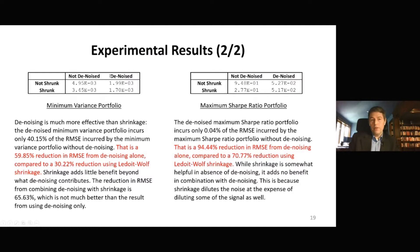When we denoise the correlation matrix without shrinkage — just denoising, no shrinkage — there is a substantial reduction in the root mean square error. The reduction is around 60%. Think about it: 60% reduction in the estimation error from simply applying Marchenko-Pastur, separating the noise-related eigenvalues from the signal-related eigenvalues, and centering the noise-related eigenvalues.